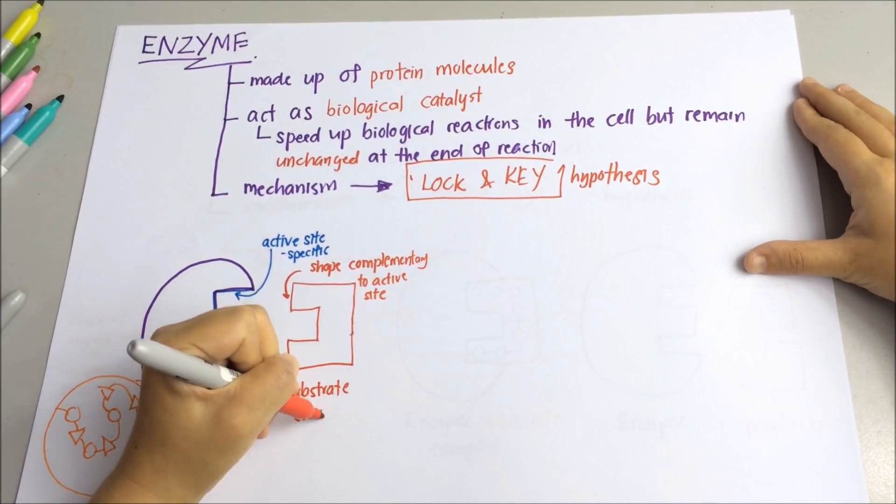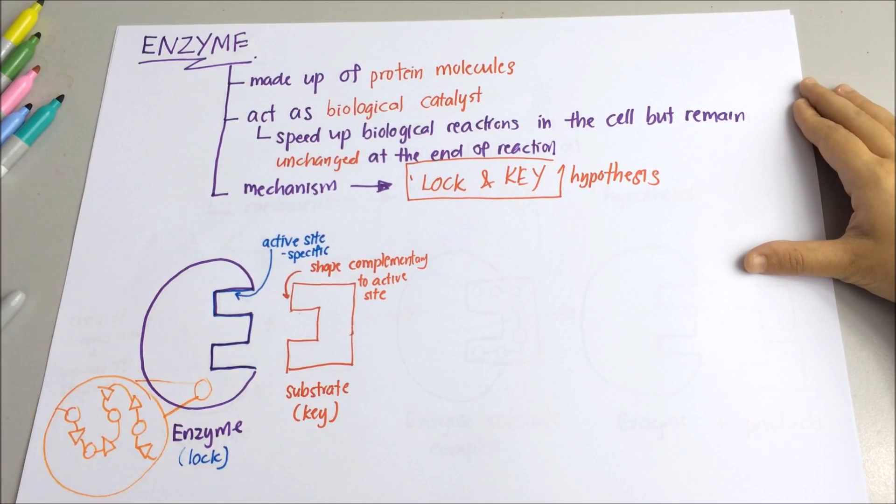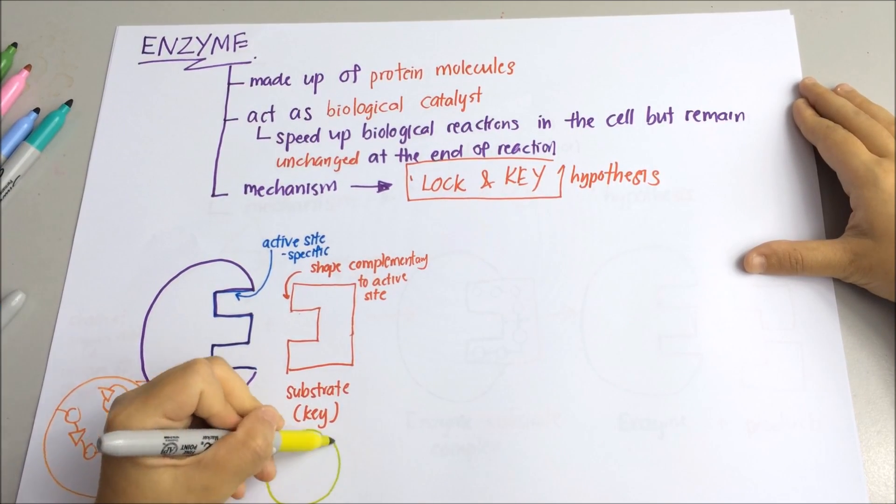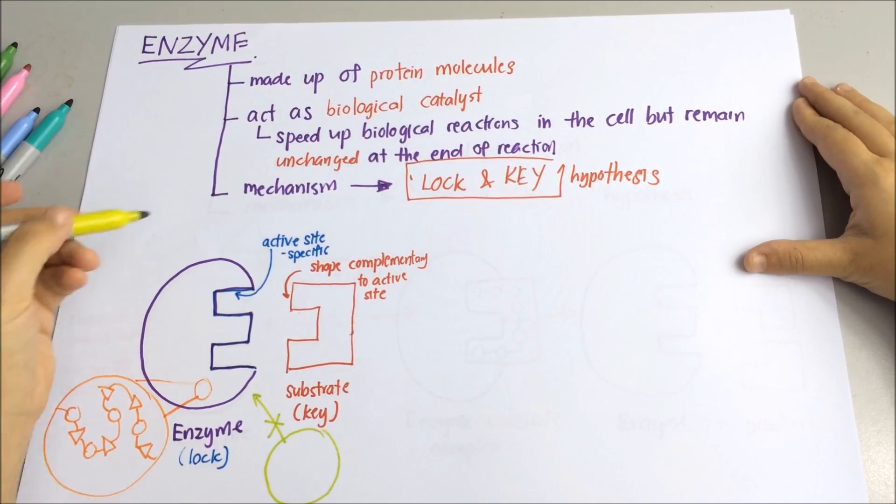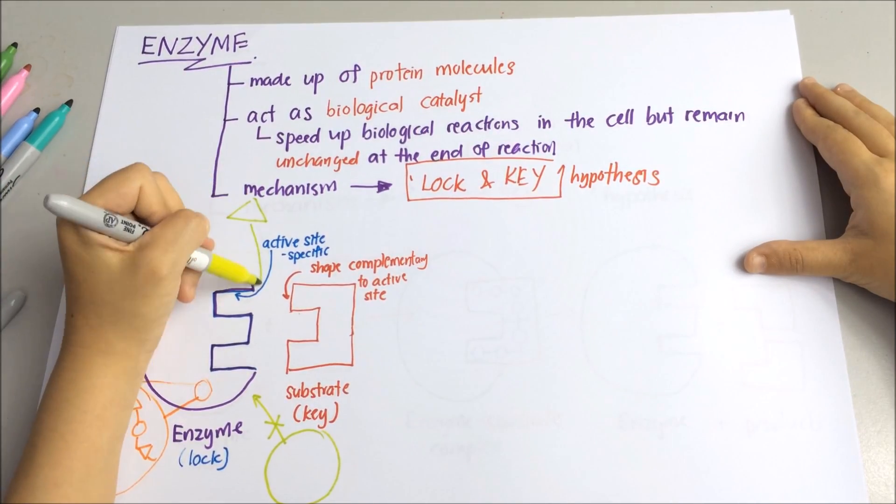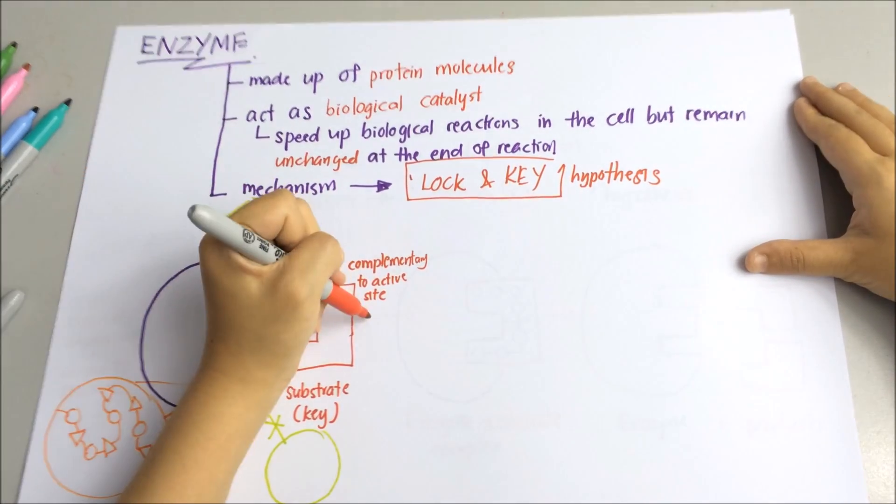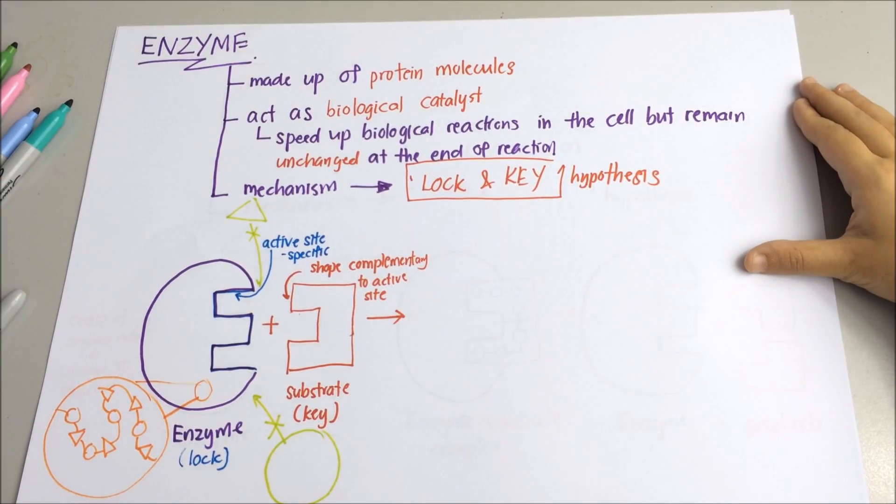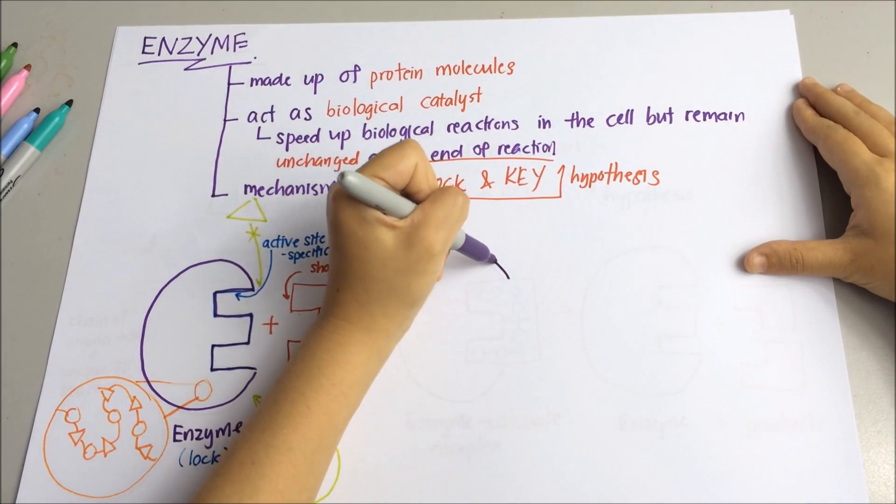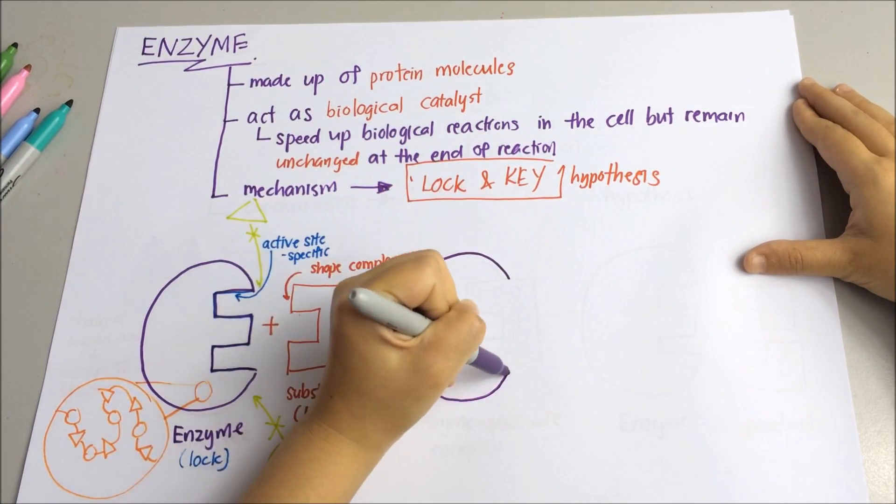The lock is the enzyme and the key is the substrate. Only the correctly sized key fits into the keyhole of the lock, which means that the enzyme specifically reacts with only one or a very few similar compounds.